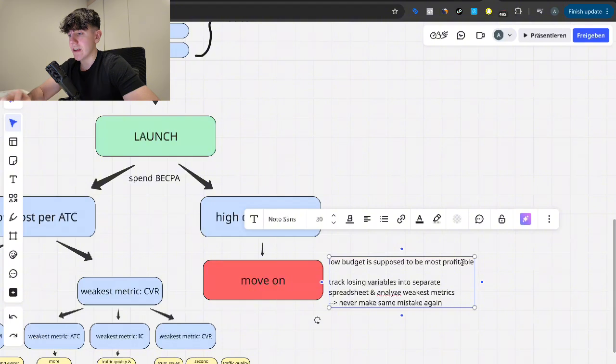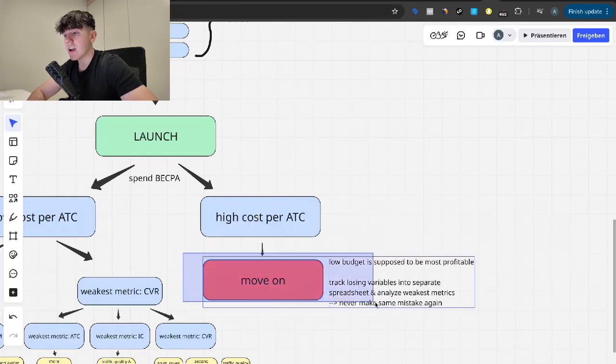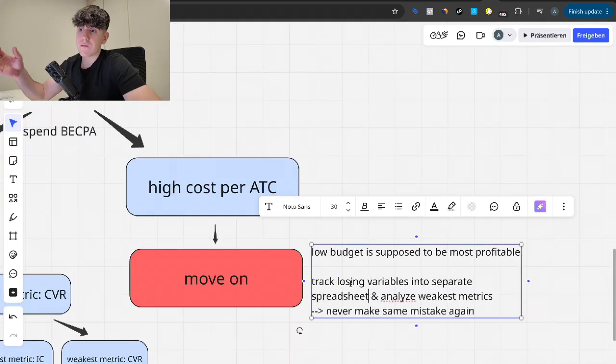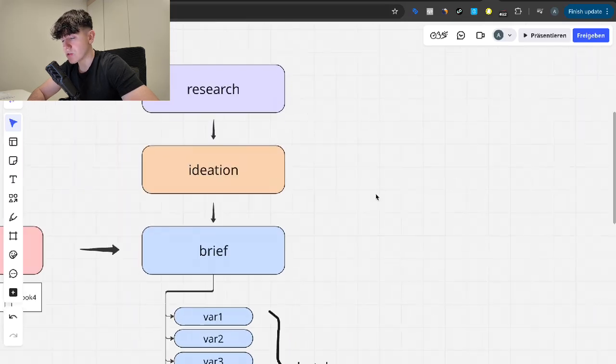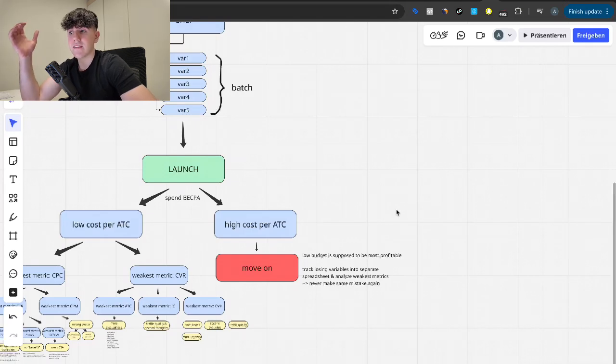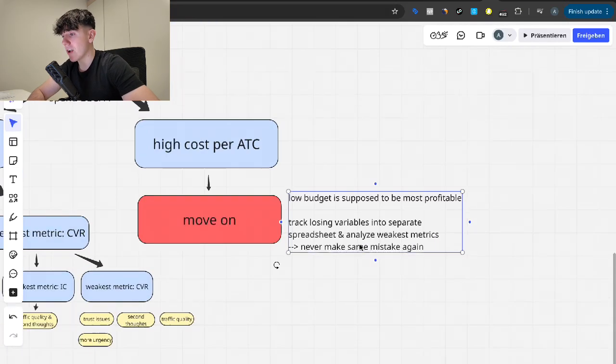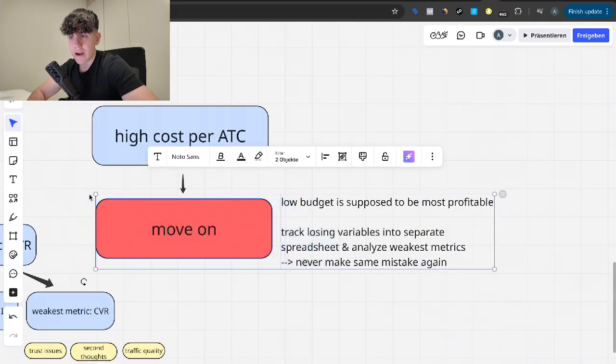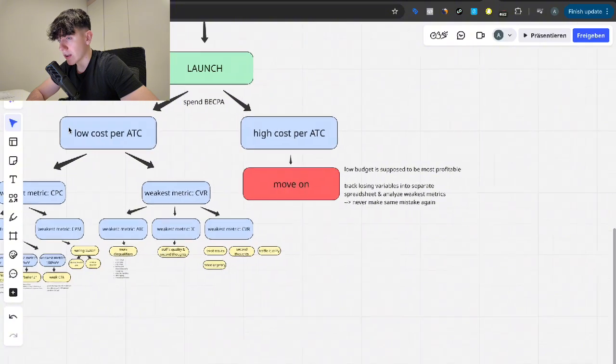We're going to iterate on something which already does show performance. That's the whole point of the iteration process. And so we move on because the low budget is supposed to be the most profitable. We're never going to get this concept better and more profitable. Even if we iterate for years and years, it's never going to be a crazy winning ad. So whatever metric went wrong, analyze it. We don't just want to move on and do nothing with it. I actually want to understand which exact things led to this concept and this specific ad do bad and go wrong. And then we want to track it in a separate spreadsheet, which is the losing variables. So we have one for winning variables and then you have one for losing variables. You never need to make the same mistakes again.